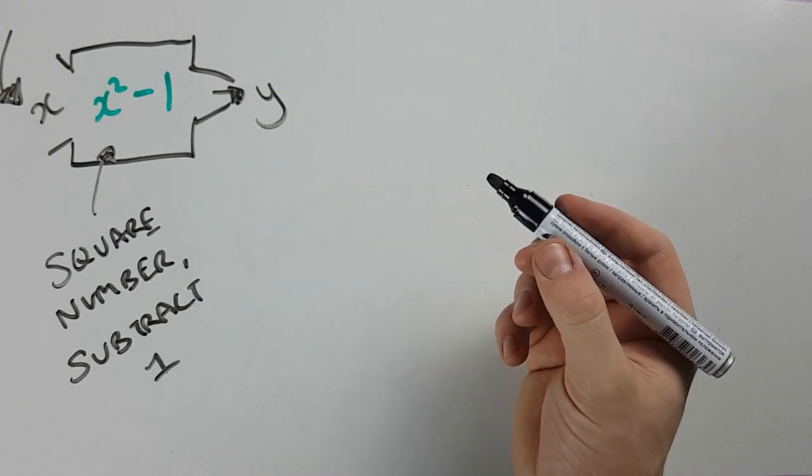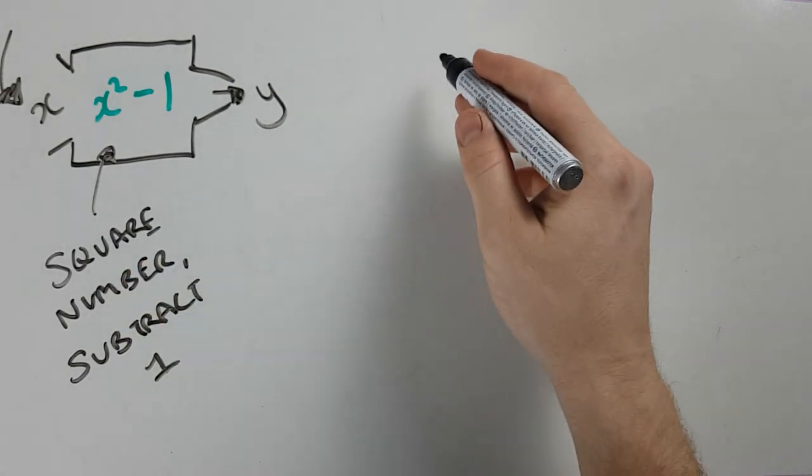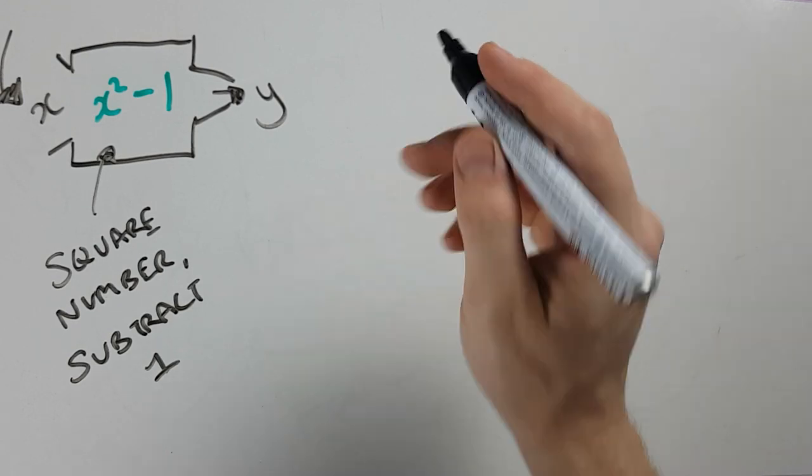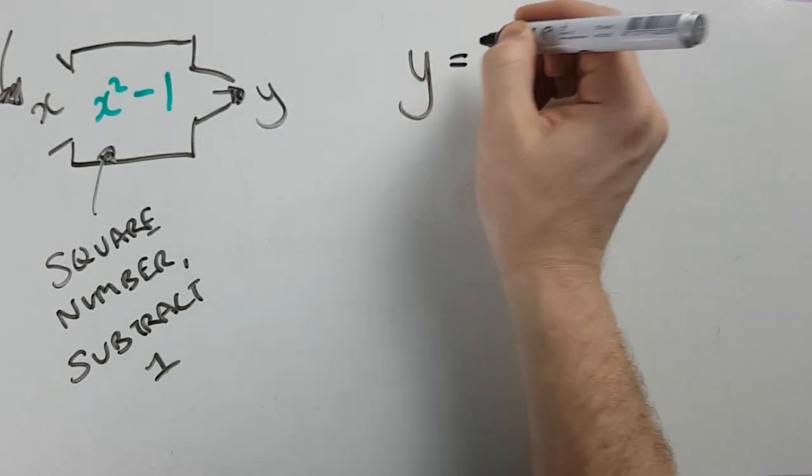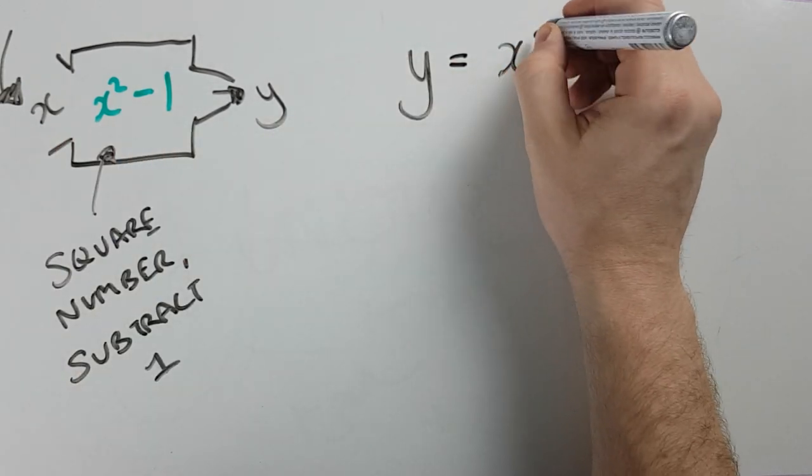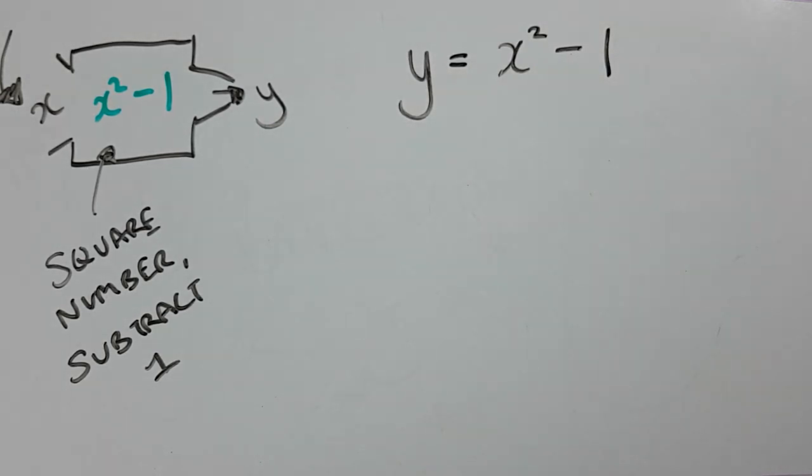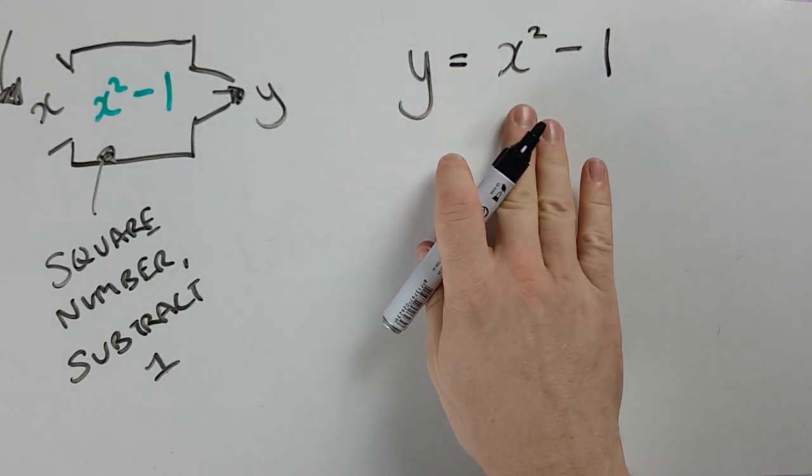So how do I write that? We need to look a bit here at terminology and just how to write functions. There's a few different ways. So first, we can say Y equals, our output equals, our input squared minus 1. That would be one way to write the function. Output equals X squared minus 1.